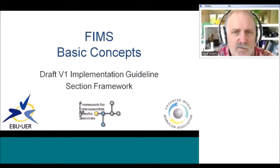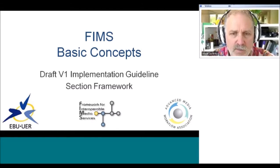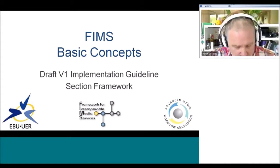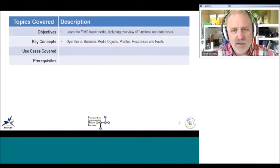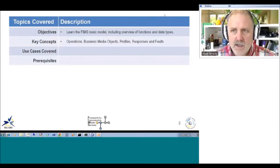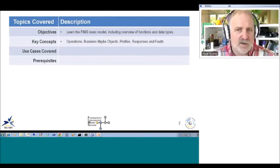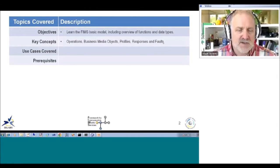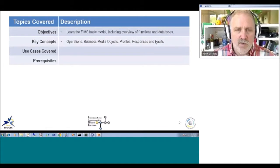This is a presentation on FIMS basic concepts. The current FIMS version is 1.1. The presentation will cover the basic model including an overview of functions and data types, operations, objects and related types — profiles, responses, faults, and the service model — everything necessary to understand what FIMS is getting at and how to approach it.